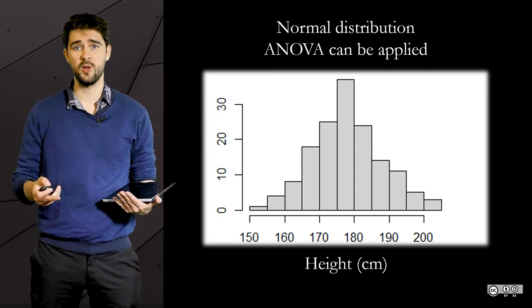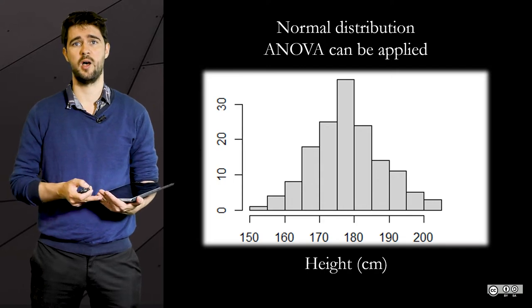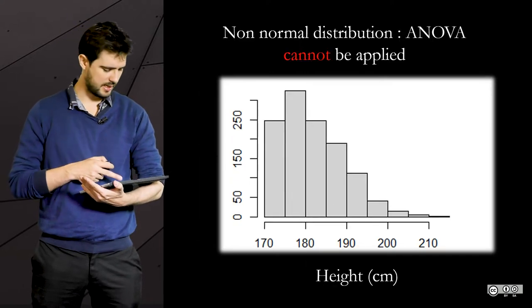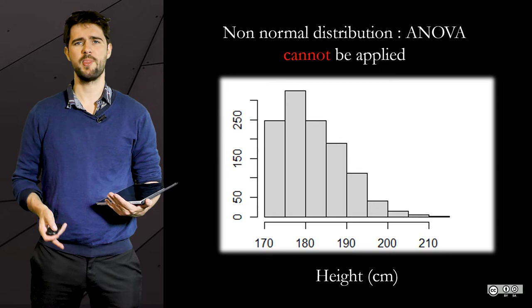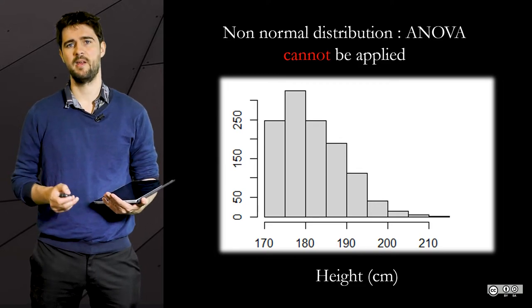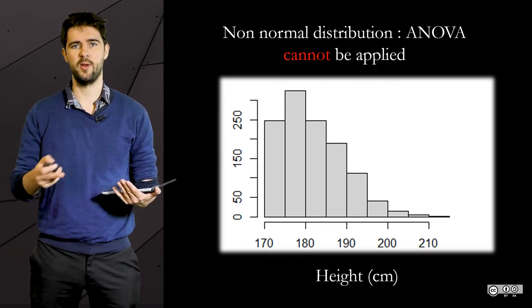For instance, if the distribution of the height of students that you are measuring is skewed, like in that example, well, that should raise a red flag. And you may not be allowed to apply an ANOVA.